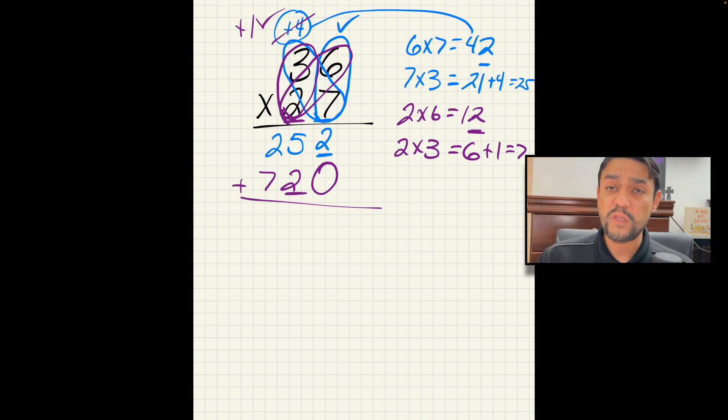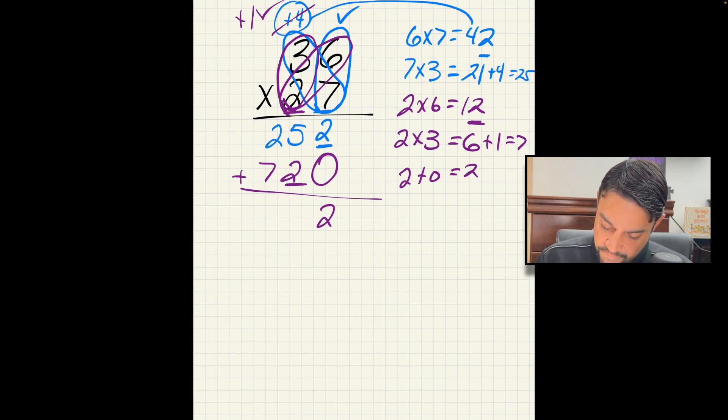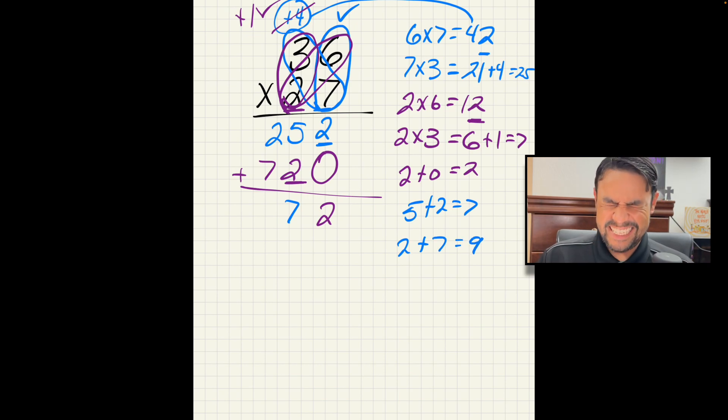We're always putting groups together in multiplication. 2 plus 0 is 2. 5 plus 2, that's 7. 2 plus 7, that's 9. Easy peasy, lemon squeezy.